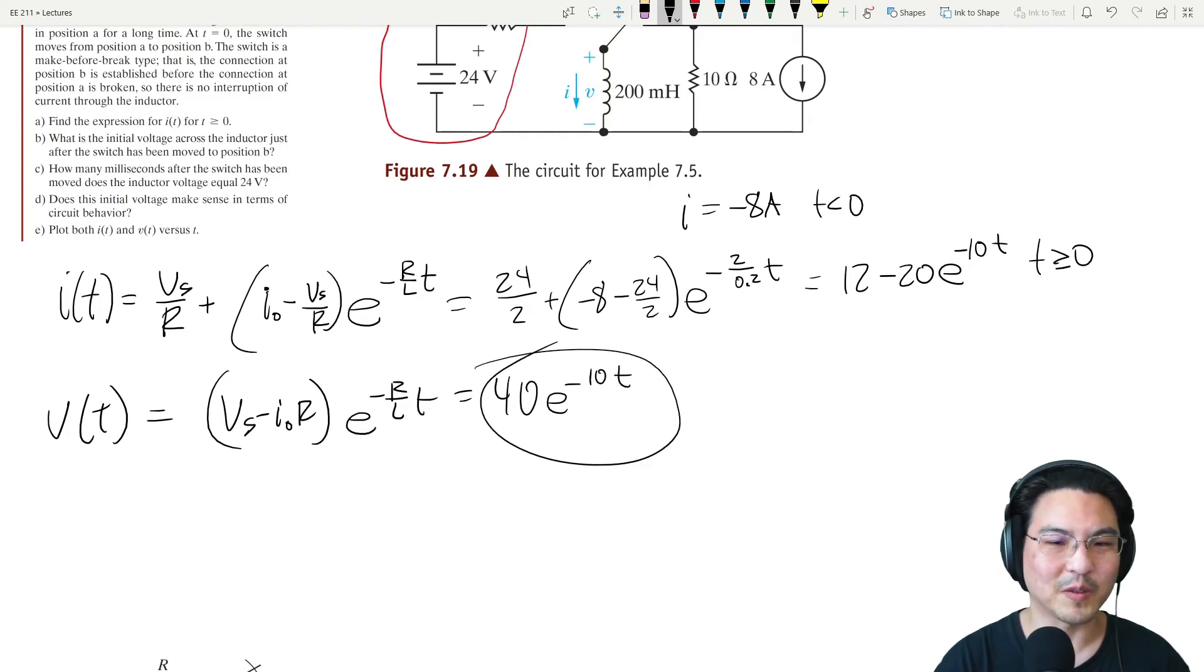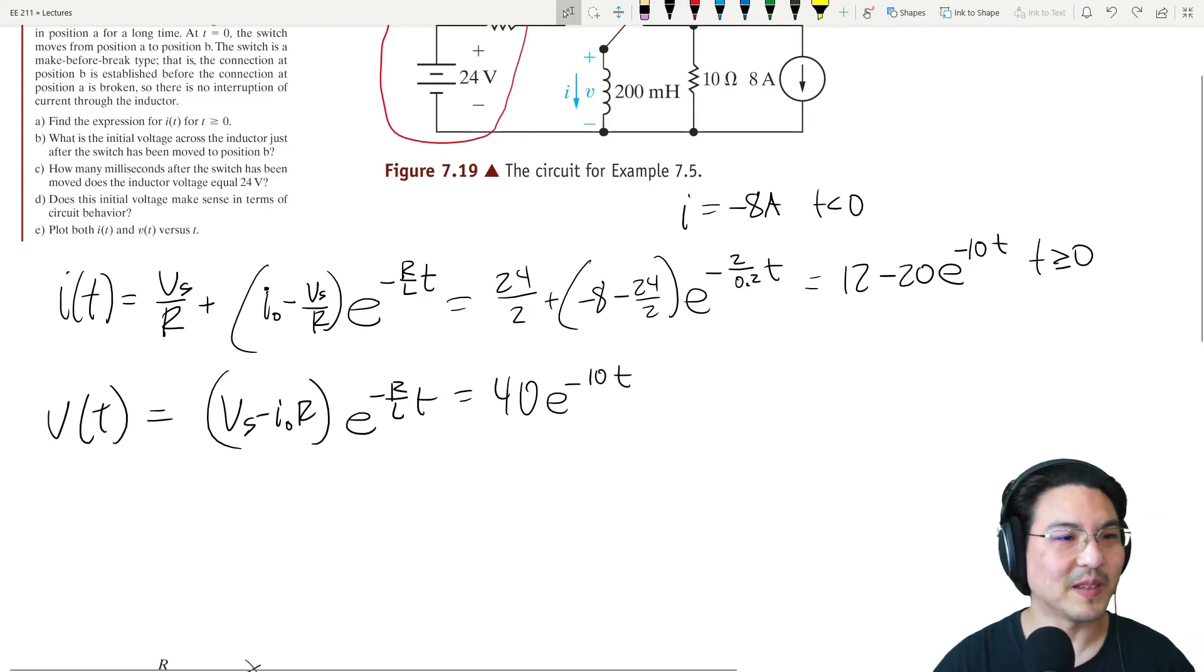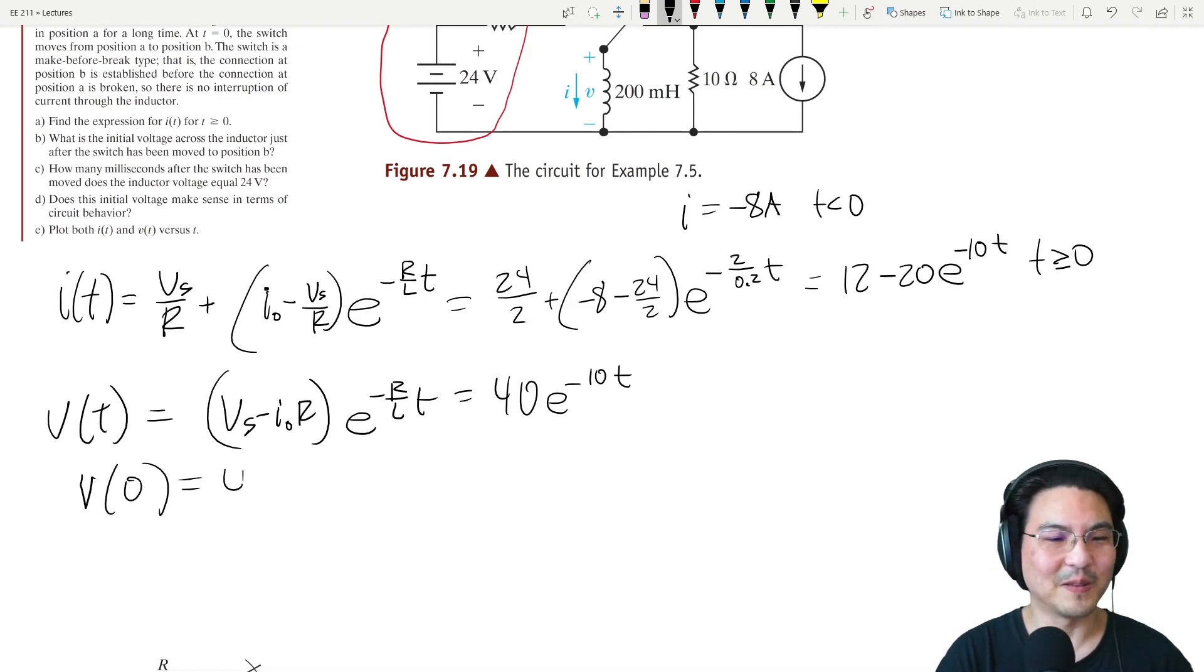Oh no, it's the initial voltage. We need V at t equal to zero, so 40 e to the zero, so 40. There we go, 40 volts.